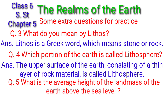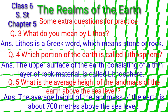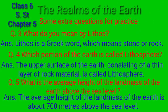Question number five: what is the average height of the landmass of the earth above sea level? The average height of the landmass of the earth is about 700 meters above sea level. Thank you students for watching the video — please like and subscribe to my YouTube channel.